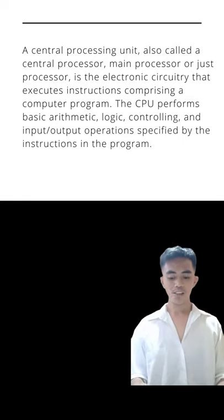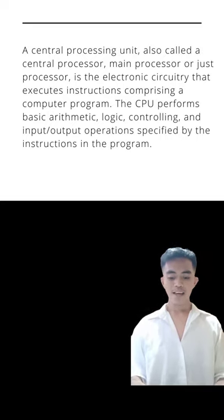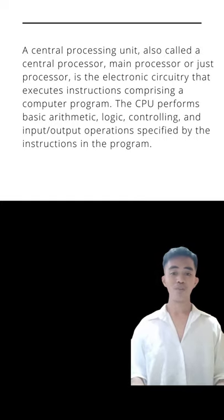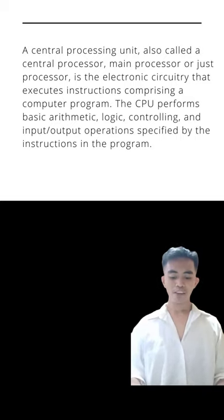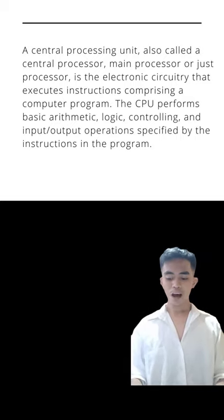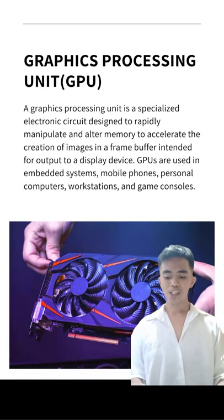Next is the central processing unit or CPU. A central processing unit, also called a central processor or main processor, is the electronic circuitry that executes instructions comprising a computer program. The CPU performs basic arithmetic, logic, controlling, and input-output operations specified by the instructions in the program.